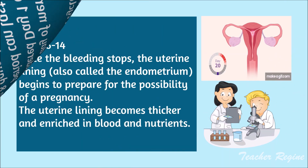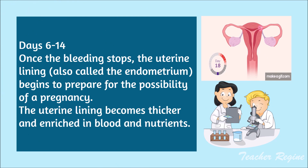Days 6 to 14: once the bleeding stops, the uterine lining — also known as the endometrium — begins to prepare for the possibility of pregnancy. The uterine lining becomes thicker and enriched in blood and nutrients.